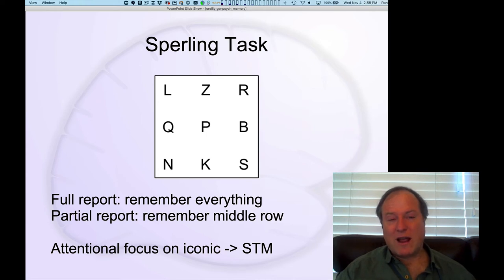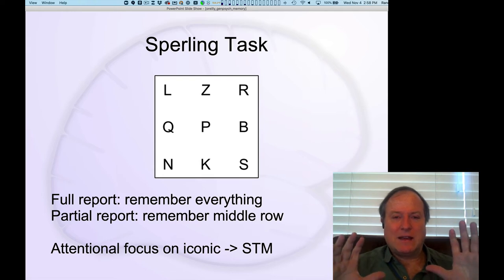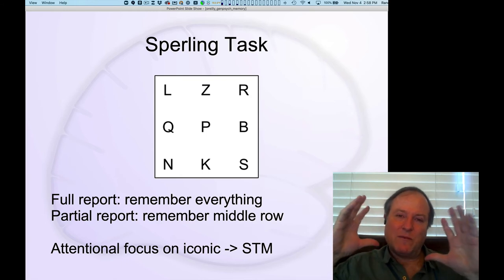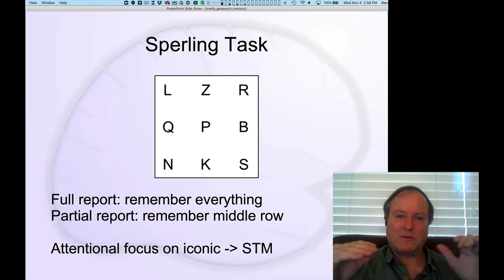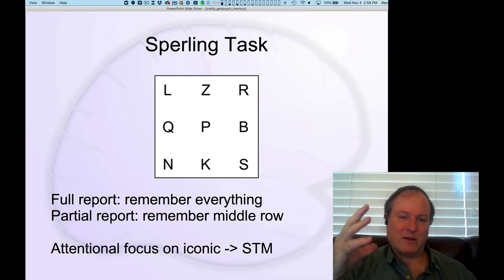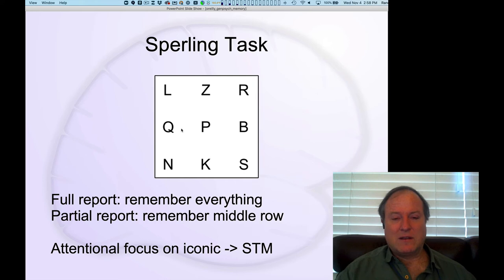However, in the partial report condition, the display is flashed and then you're told to report only the letters in the middle row, for example. That flash of memory is still present in your iconic memory system, and even when told after the fact to report just the middle row, as long as it's within the duration of that neural firing in the iconic visual memory, you can report back those three letters with high accuracy.